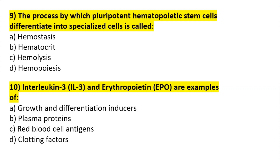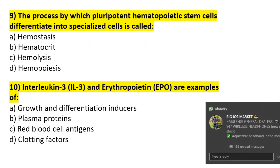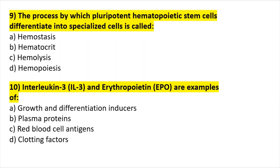Question nine: the process by which pluripotent hematopoietic stem cells differentiate into specialized cells is known as haemopoiesis.